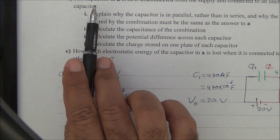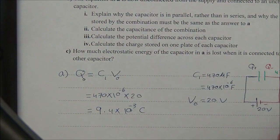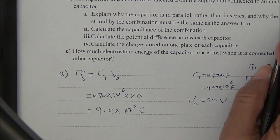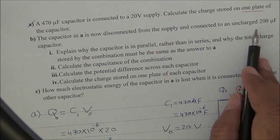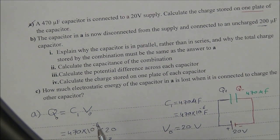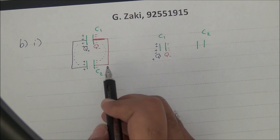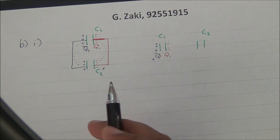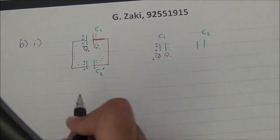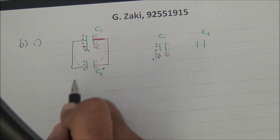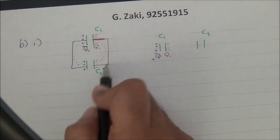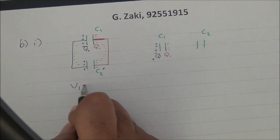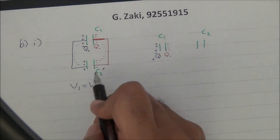Now for part B: the capacitor from part A is disconnected from the supply — fully charged — and then connected to an uncharged 200 microfarad capacitor. Charge will be transmitted from one plate of C1 to one plate of C2, and from the other plate to the other, stopping at equilibrium when V1 equals V2.